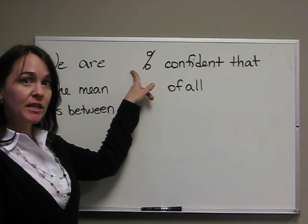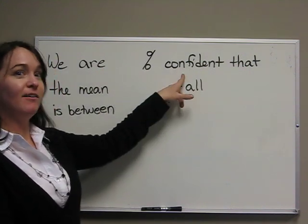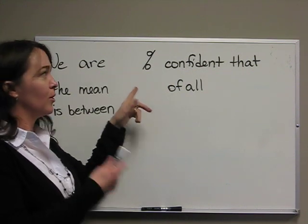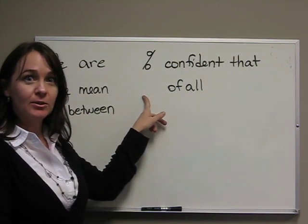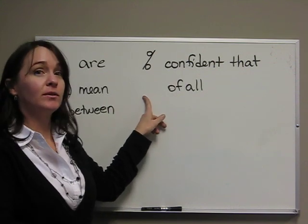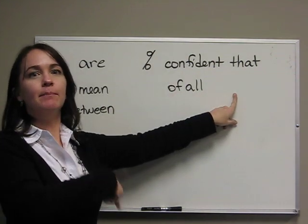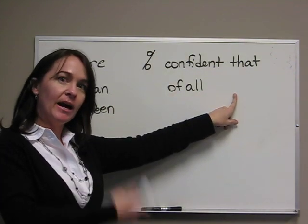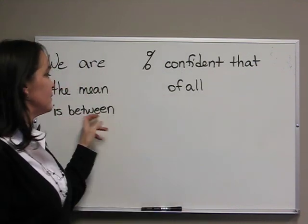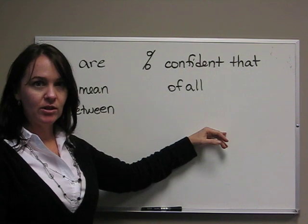We get this percent from our confidence level. So: confidence level percent confident that the mean weight, or the mean height, or the mean price, or the mean score of all — and then whoever has that mean height, weight, or score — so our population is between, and then we put our calculations here.